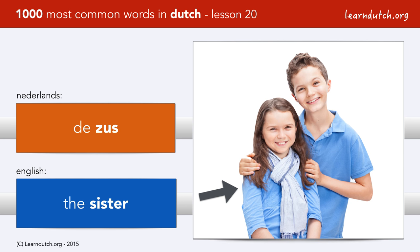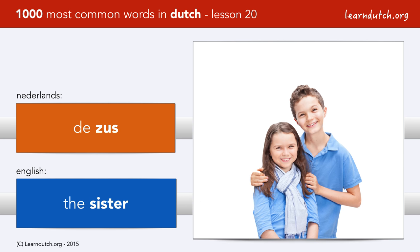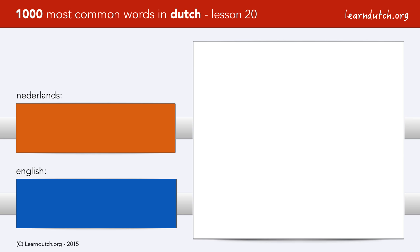I do — I have both. Ik heb een broer en een zus. They're not here in the picture; they're older. And my brother is also a Dutch teacher — leraar Nederlands.